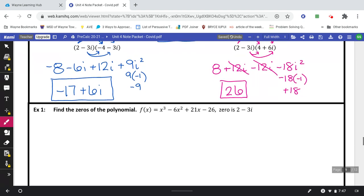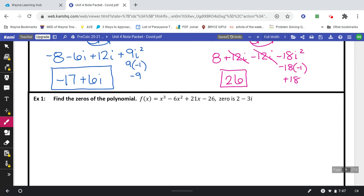Alright, let's go ahead and get started with our work for today. So find the zeros of the polynomial. Notice if it's x to the third, you have three zeros. This one right here that they give you, zero is 2 minus 3i. That is one. I'll need two more. If I know 2 minus 3i is an answer, I also know 2 plus 3i is an answer. They always come in pairs.